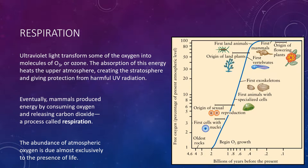Ultraviolet light transformed some of the oxygen into molecules of O3, or ozone. The absorption of this energy heats up the upper parts of the atmosphere, creating the stratosphere and giving us a protective layer from UV radiation known as the ozone layer. About 2 billion years ago, a new type of life evolved to take advantage of this newly abundant oxygen. These new organisms produced energy by consuming oxygen and releasing carbon dioxide — a process known as respiration, used by all modern animals, including humans. The abundance of atmospheric oxygen is due almost exclusively to the presence of life, a situation with no parallel anywhere else in the solar system.